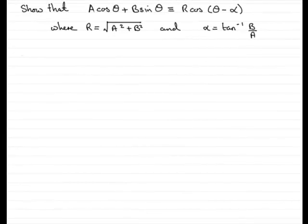Hi, welcome to this tutorial on showing you that A cos θ plus B sin θ, where A and B are constants, is identical to R cos(θ - α), where R is the constant which is equal to the square root of A² plus B², and α is a constant which is equal to the inverse tan of B over A.